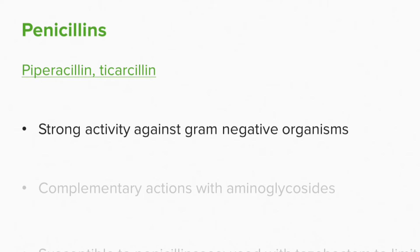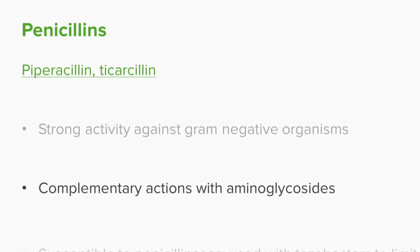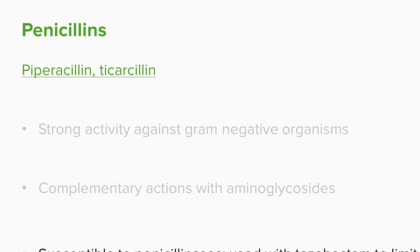Piperacillin and ticarcillin are stronger agents, very effective against gram-negative organisms. They are very complementary with aminoglycosides — for example, piperacillin will be combined with tobramycin for very strong gram-negative treatment. Once again, these drugs are susceptible to penicillinases, so we often combine piperacillin with tazobactam to limit resistance.